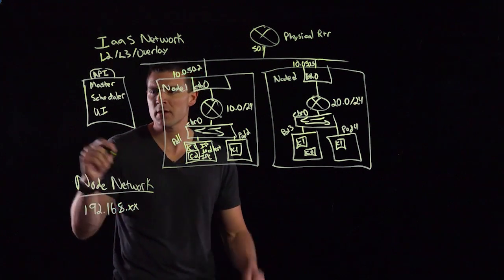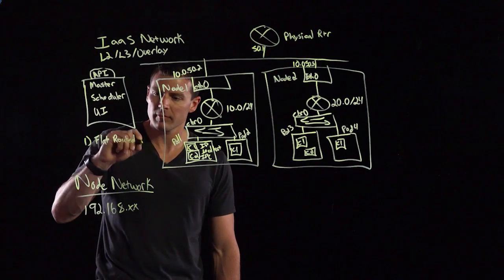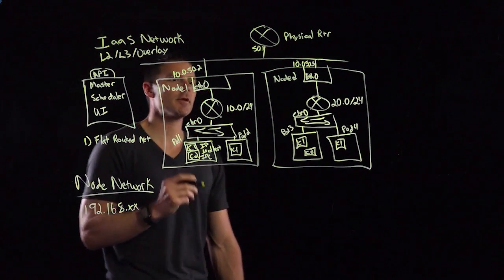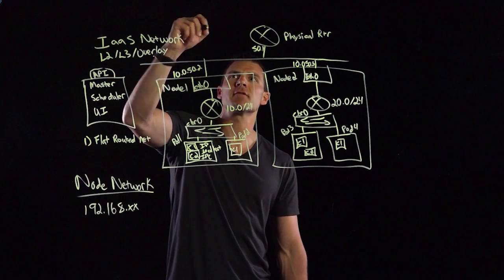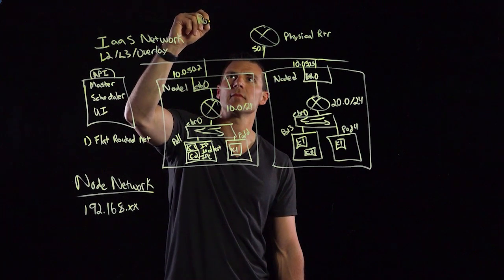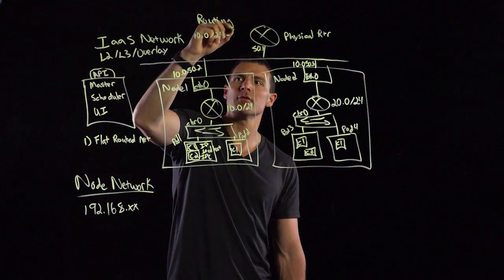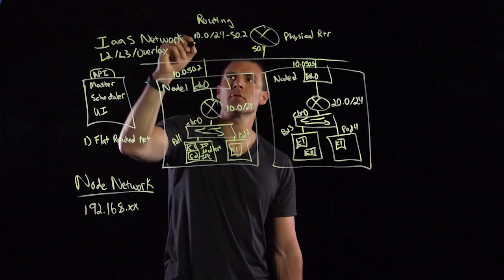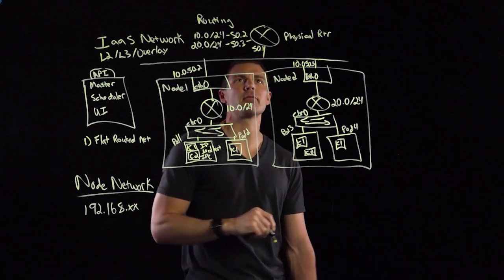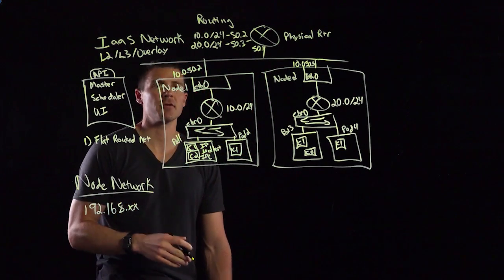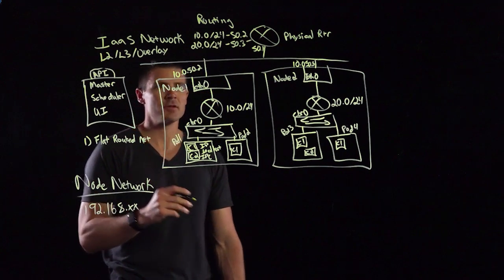How do these pods communicate with each other? A couple of different things that we can do here is the first one is we can have a flat routed topology. In this particular case, these node networks are actually going to need to be physically advertised across the physical network. In this physical router, in my routing table, I'll have 10.0 slash 24 going to 50.2, and then I'll have 20.0 slash 24 going to 50.3. These will be installed routes inside my physical router and across my physical fabric. So this is going to be over L3. I need all of these routes reflected inside my physical network.